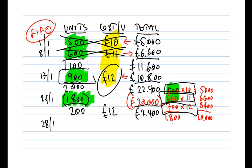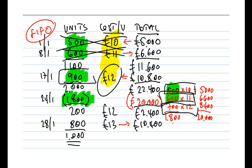That deals with the issue on the 24th. We've then got a final purchase — don't forget the purchase on the 28th: another 800 units at a cost of £13 per unit, giving a total value of £10,400. Adding that final purchase, we now have 1,000 units of inventory at the end of the month with a total value of £12,800.